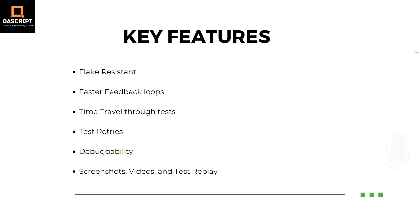The next feature Cypress provides is time travel through tests, which means you can exactly see how your app is behaving at any point during test execution. Cypress takes DOM snapshots of your application under test as the commands and assertions in your tests are being executed. This enables you to view the real UI of your application at any point during execution. By clicking from one command to another in the command log, you can see exactly what Cypress is doing and how your application is responding.